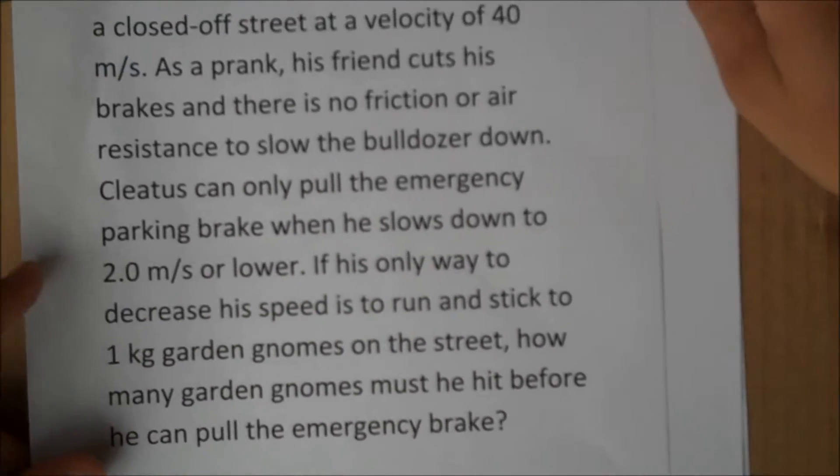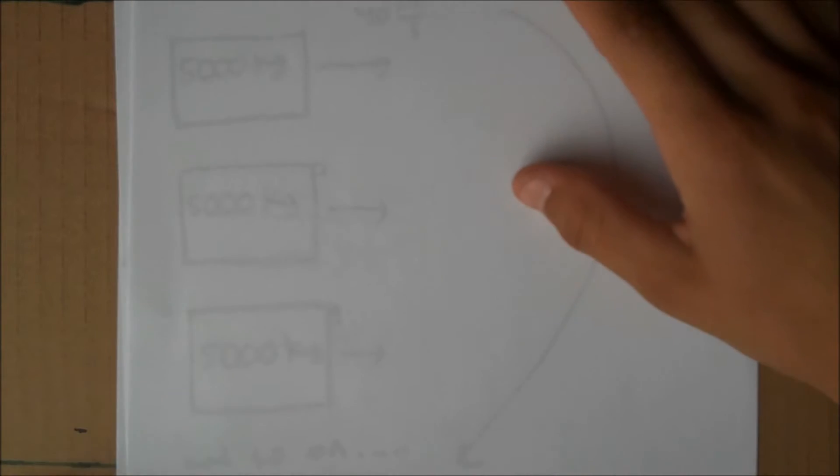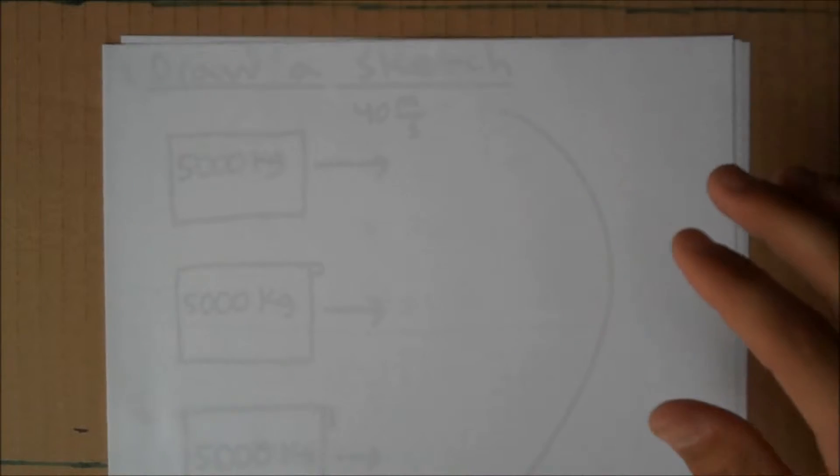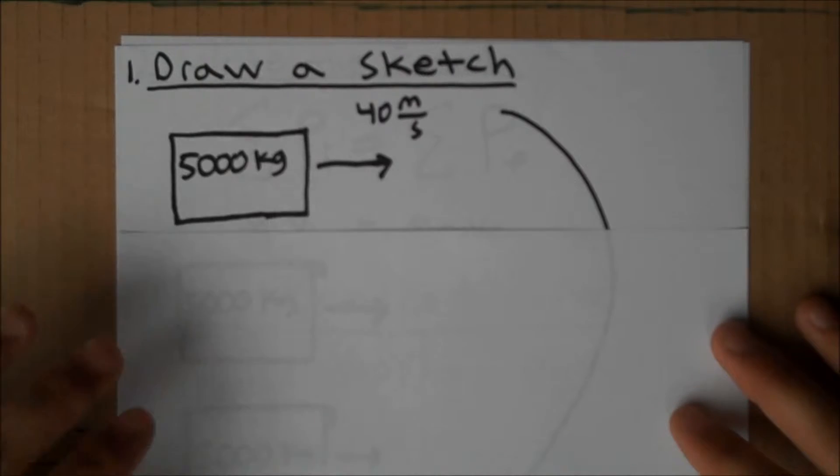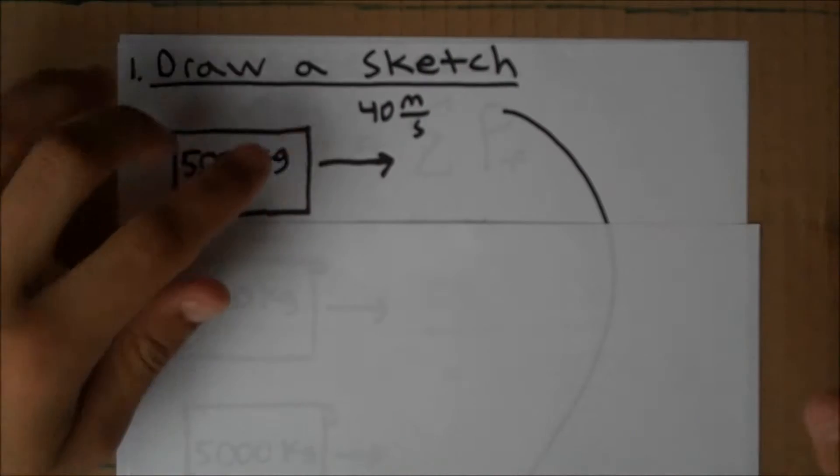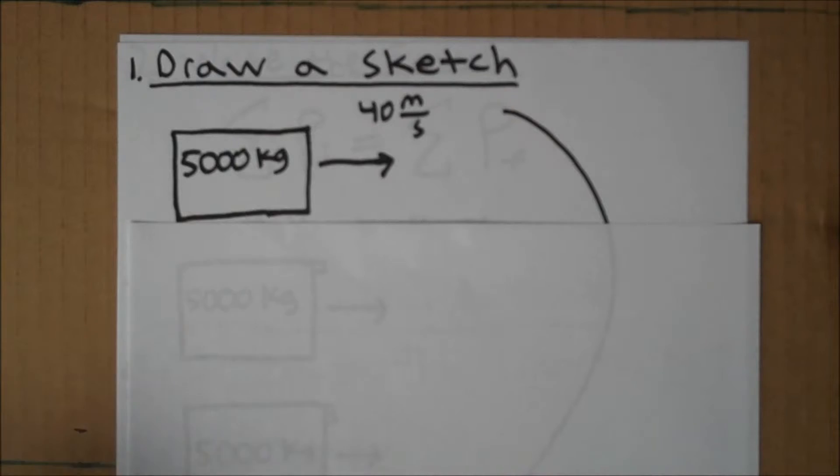As with any physics problem, our first step should be to draw a sketch. So here we have the 5,000 kg bulldozer moving at 40 meters per second down the street.